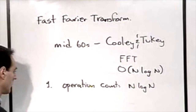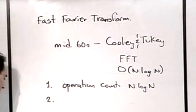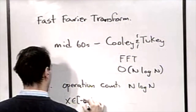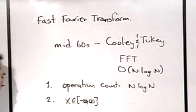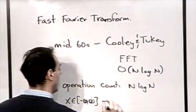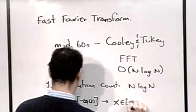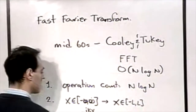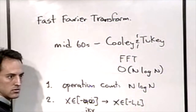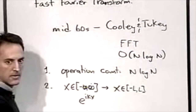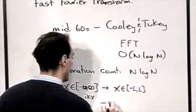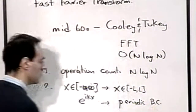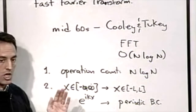Second, the transform is theoretically defined on negative infinity to infinity, but in practice on [-L, L]. The transform kernel e^(ikx) is oscillatory, which implies periodic boundary conditions. This can be restrictive for some problems, but for many cases of interest — like vorticity in the atmosphere — the solution is essentially zero at the boundaries, so periodic BCs introduce negligible error.